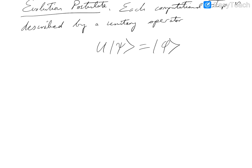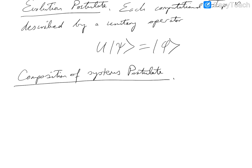Third, we have the composition of systems postulate, which says that combined systems are represented by tensor products. This applies when we form n-qubit systems where n is greater than one.